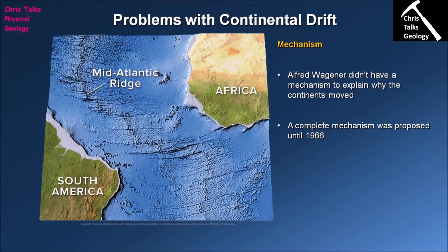The first problem that Wegener had is he couldn't explain the mechanism. The evidence would suggest that at some point the continents split apart and migrated to their current positions, but it doesn't explain why they moved — what was the power source actually doing the moving? It's like driving a car and not knowing it's powered by the internal combustion engine: you know it started somewhere and finished somewhere, but you don't know why. It's not just enough to have the evidence. Wegener proposed this theory in 1912, but it wasn't until 1966 that a complete mechanism to explain why and how the continents were actually moving was put forward and universally accepted — over 50 years later.